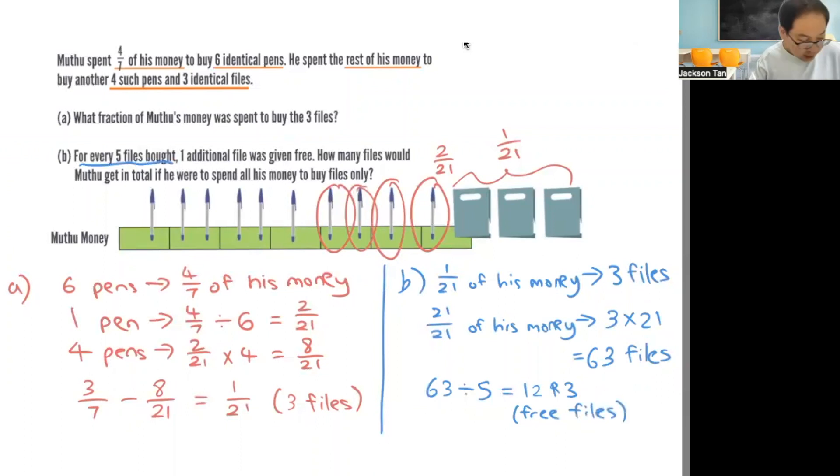Three free files, so you take sixty-three add the free files, that will be equal to seventy-five files. So answer for part B is seventy-five.